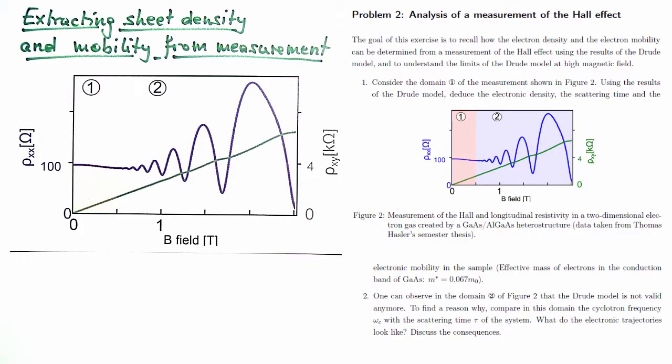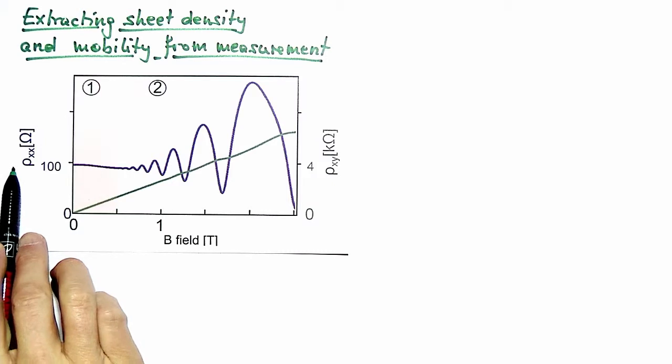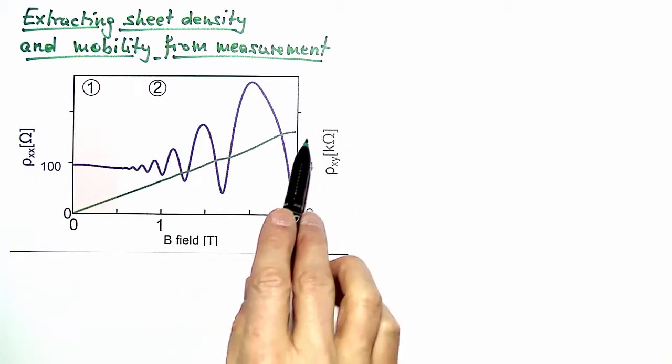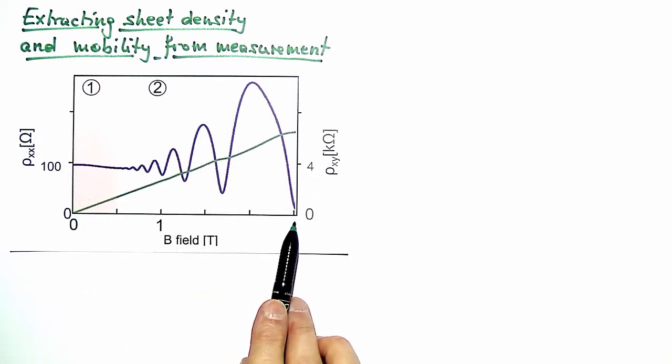The goal of this exercise is to apply Drude's theory to a real measurement and to extract the density and mobility of the electrons in a two-dimensional electron gas. Here we've been given this measurement where the resistivity components rho_xx and rho_xy are plotted against magnetic field B.